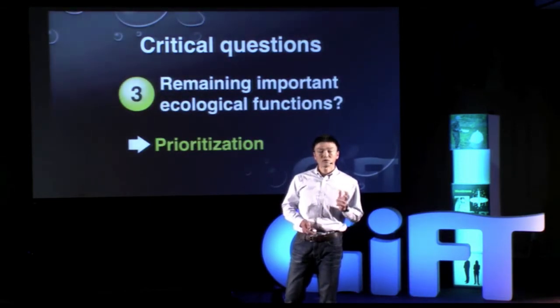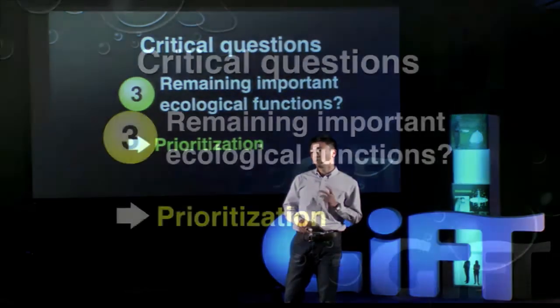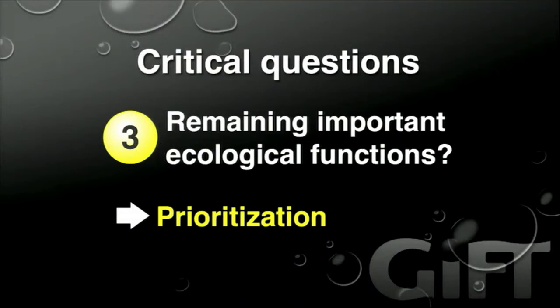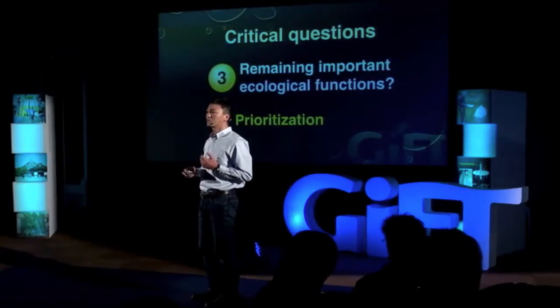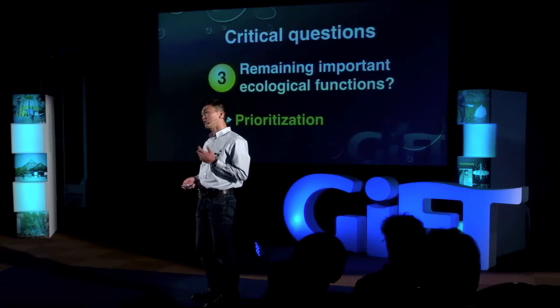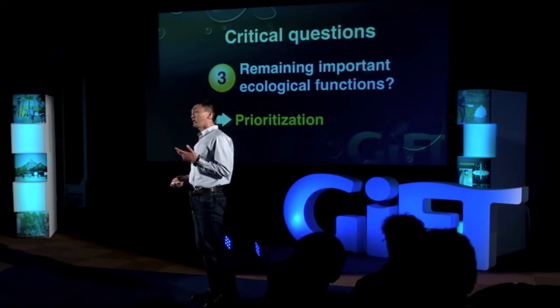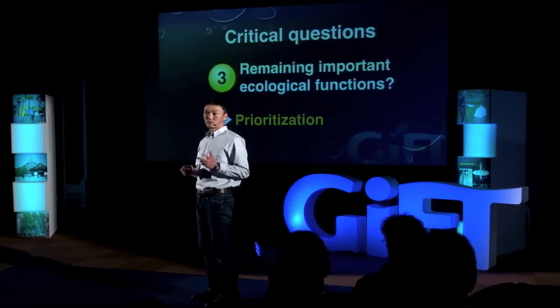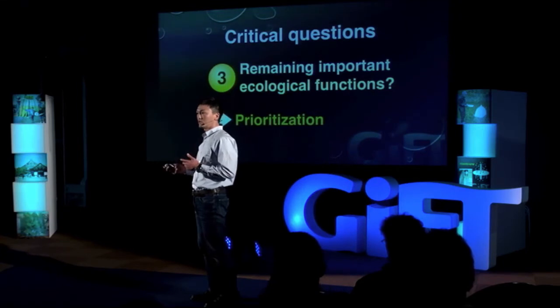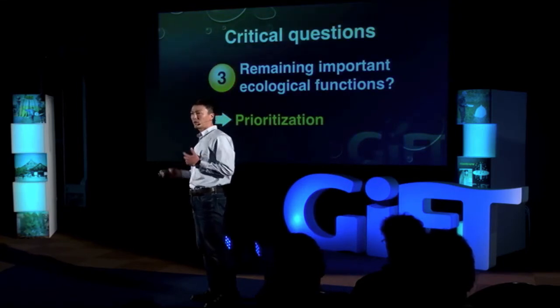Third, we also need to know where the remaining important ecological functions exist. Ecological functions refers to the processes that are important in maintaining populations of particular species and communities. With this information, we can prioritize sites or locations that need to be conserved or protected with high priority, so we can do a better job in conservation of nature.